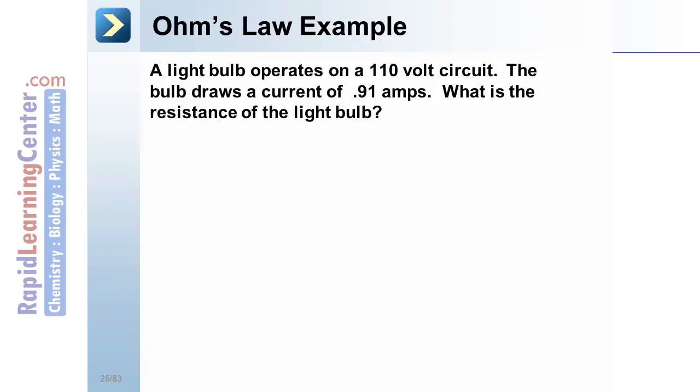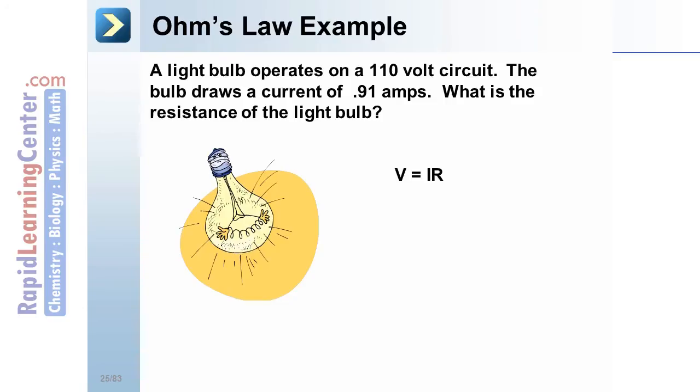Ohm's law example. Let's say a light bulb operates on a 110 volt circuit, like most of the outlets in your home. The bulb draws a current of 0.91 amps. What is the resistance of that light bulb? We'll be using Ohm's law, however, in this case we're looking for the resistance, not the voltage. We've got both the voltage and the current, which gives us a resistance of about 120.8 ohms.